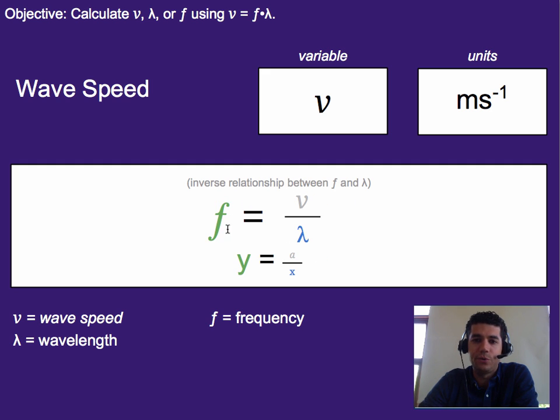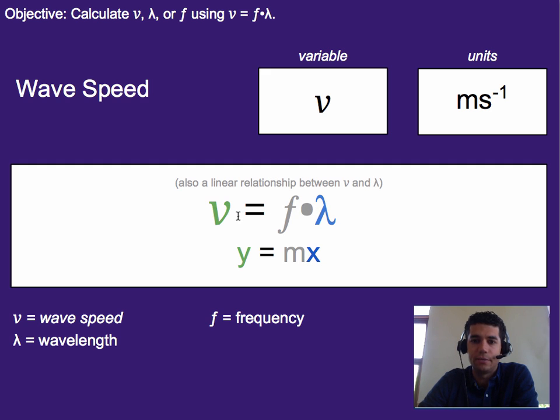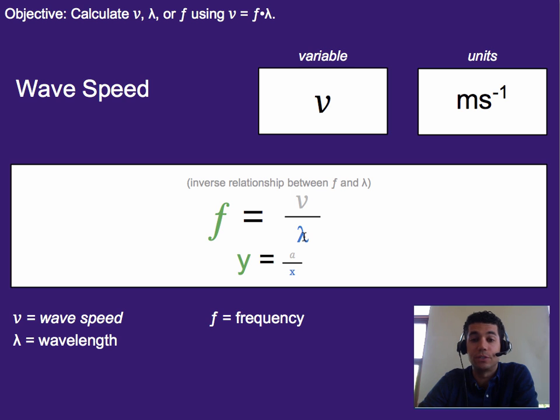However, if we're looking at frequency versus wavelength, we have to move the lambda to the other side so that we can compare the two. And what we see then is that we get an inverse relationship between frequency and wavelength. So that means as frequency goes up, the length or size of the waves goes down.